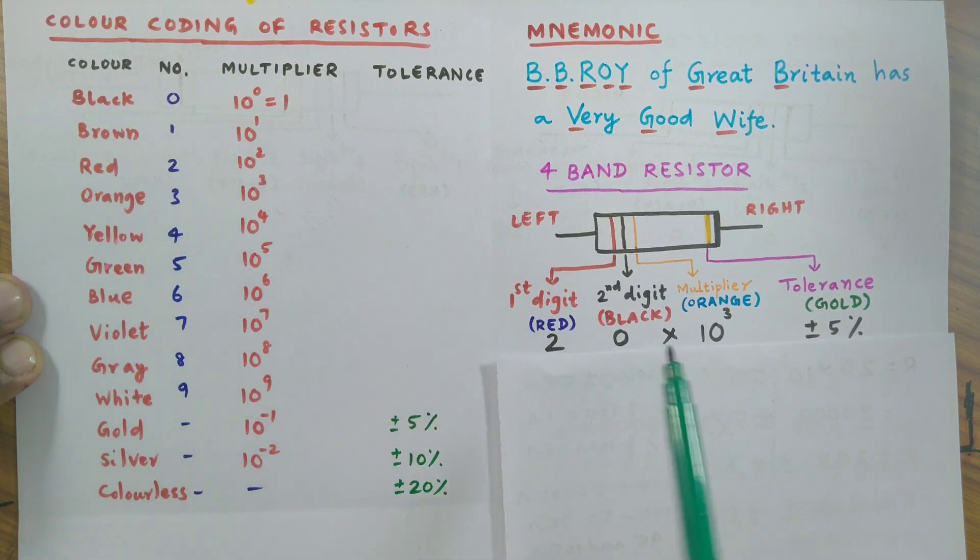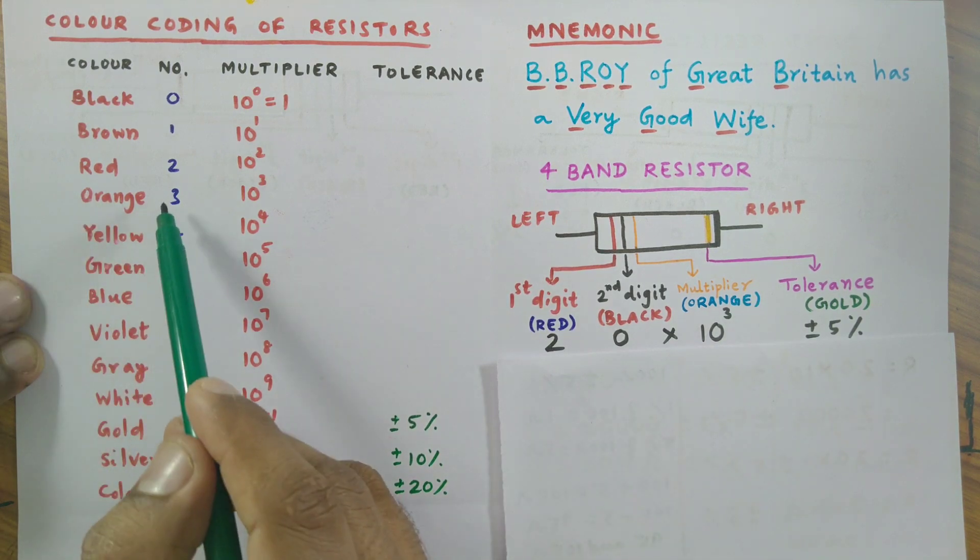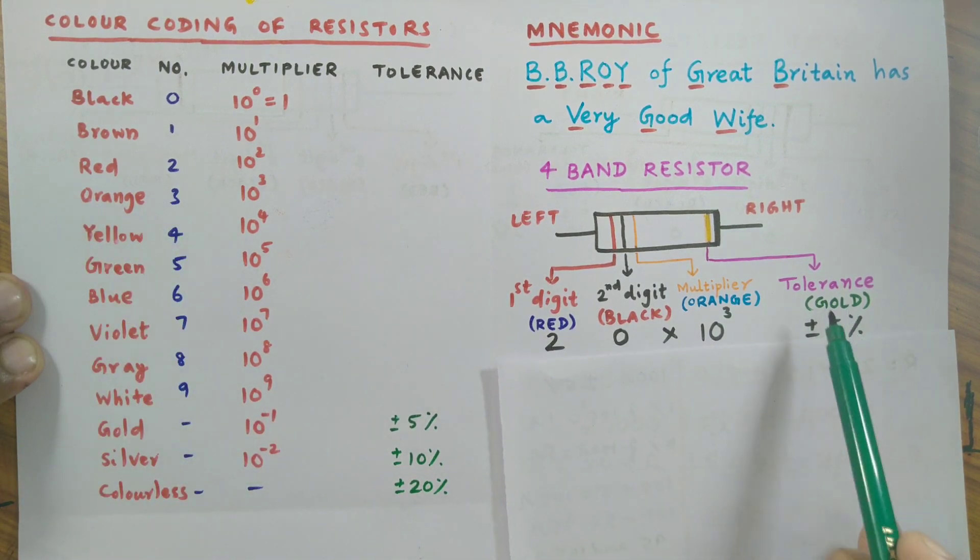which is obtained from this table of columns. Black represents zero, orange represents three, and gold, which stands for tolerance, represents plus or minus five percent, as you can see in the table of columns.